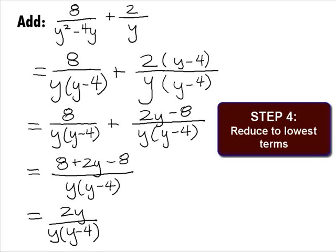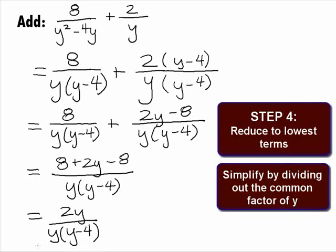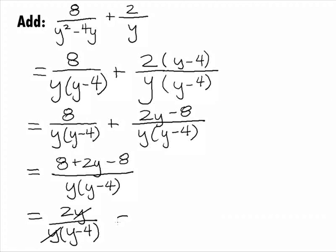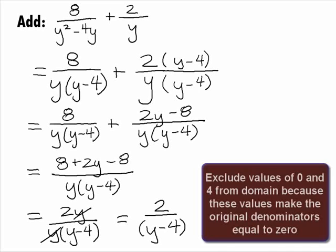In Step 4, we want to reduce or simplify the rational expression to lowest terms. It looks like we can't factor anything here. However, the numerator and denominator share a common factor of y, so we can divide out a y from the numerator and denominator. When we do this, it leaves us with our final answer of 2 over y minus 4. Note that the values that would be excluded from the domain of the original rational expressions are 0 and 4, as these values would make the original denominators equal to 0.